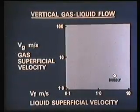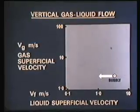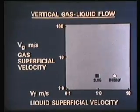Now we shall reduce the liquid flow rate while maintaining the gas rate constant. Observe the large bullet-shaped bubbles interspersed with liquid containing lots of smaller bubbles. These intermittent large-scale bubbles have given the name slug flow to this flow pattern. Let's plot another point and mark it slug.